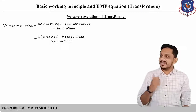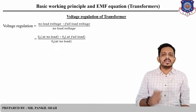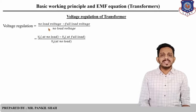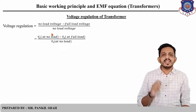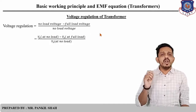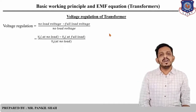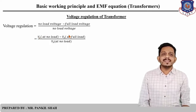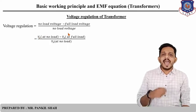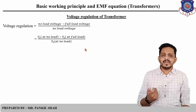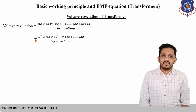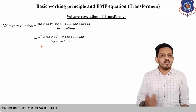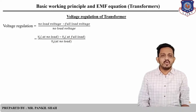The next definition is voltage regulation of a transformer. Voltage regulation is given by the formula: (no-load voltage minus full-load voltage) divided by no-load voltage at the secondary side, multiplied by 100. So it is (Vs at no-load minus Vs at full-load) divided by Vs at no-load.